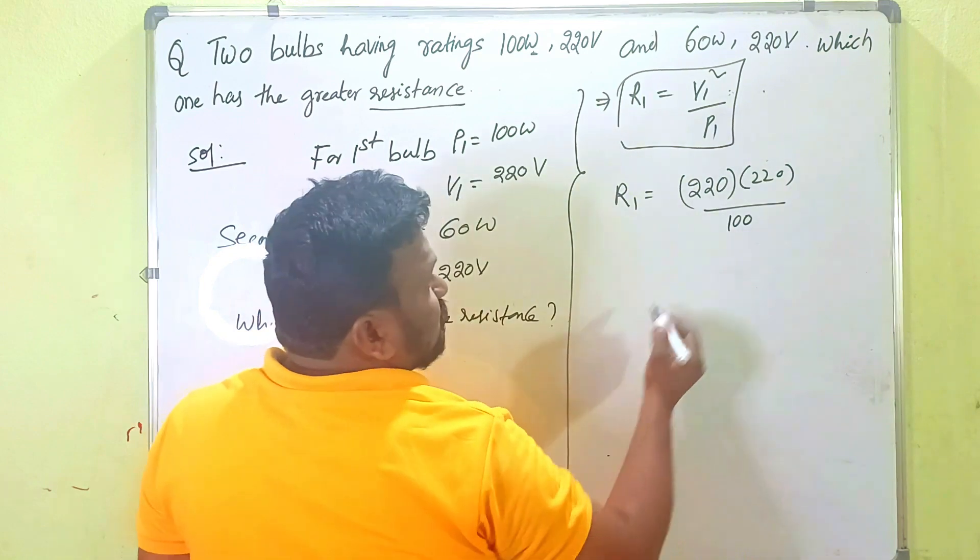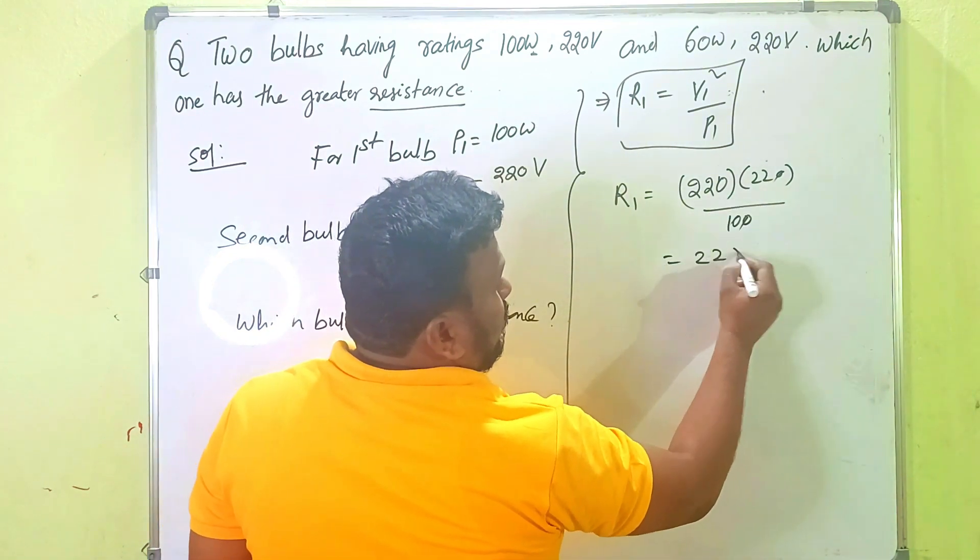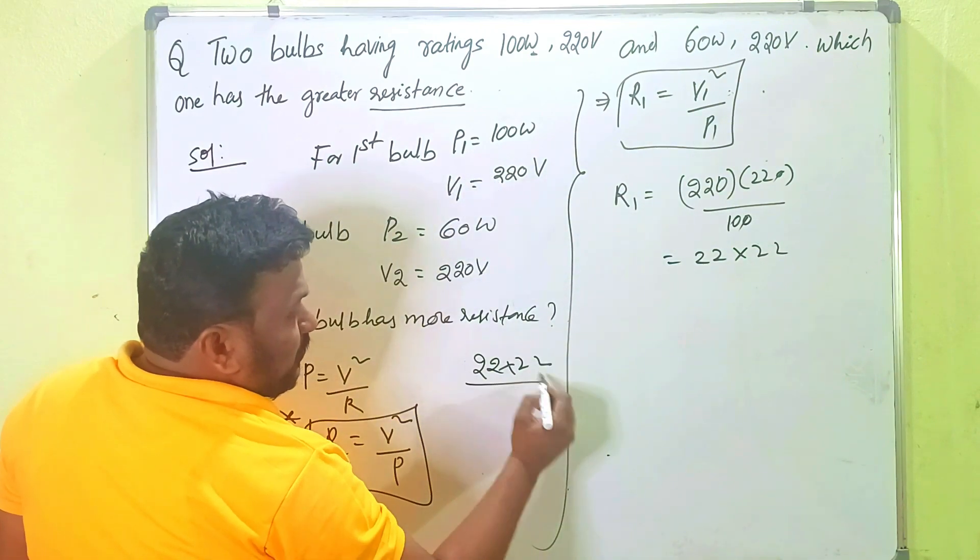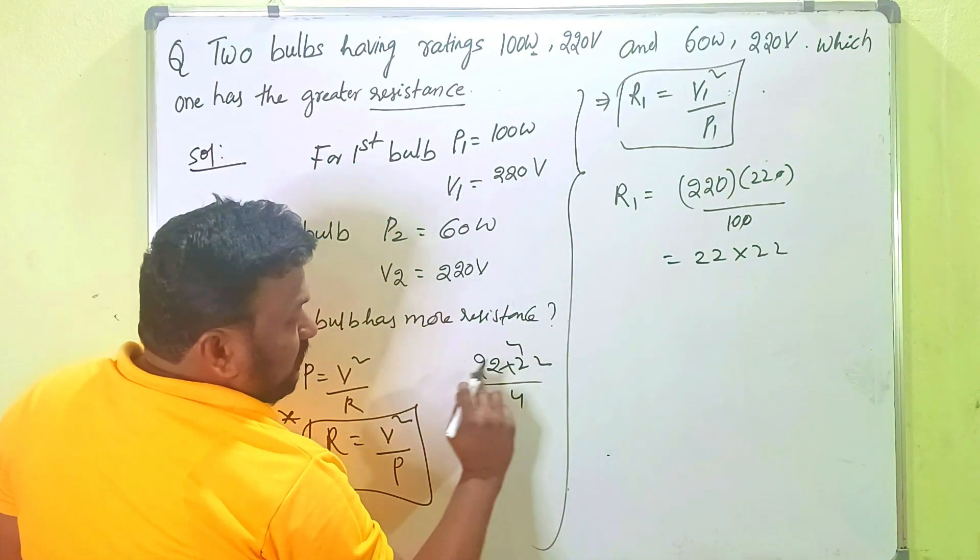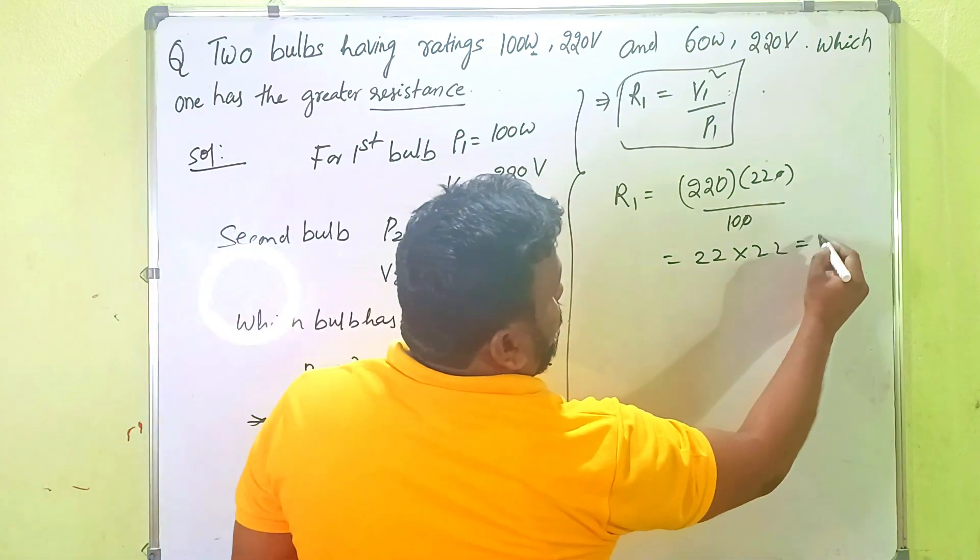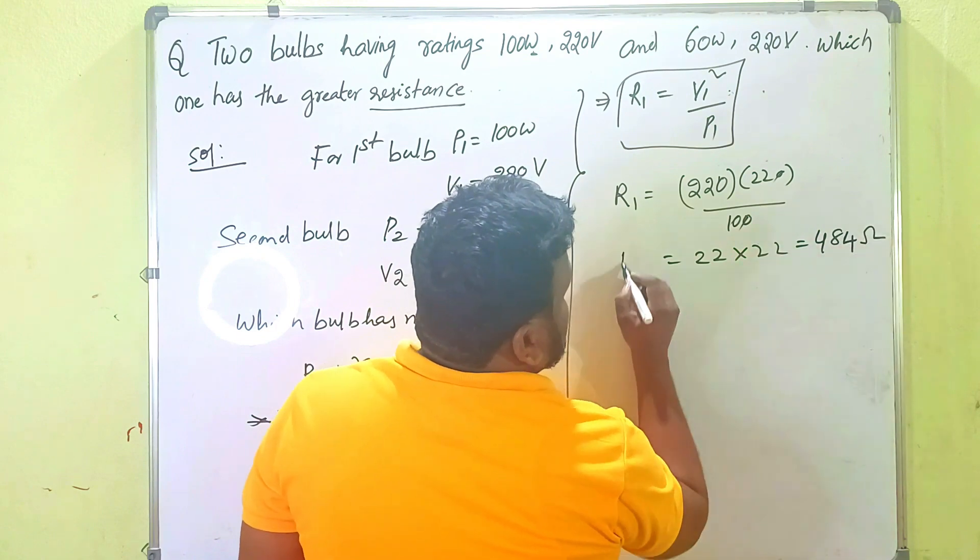Clear? So zero zero cancel, zero zero cancel. Then what you have? 22 into 22. So 22 into 22, 22 is 44. Again 22 is 44 plus 4 is 484. Then what is? For first bulb, how much resistance is there? 484.